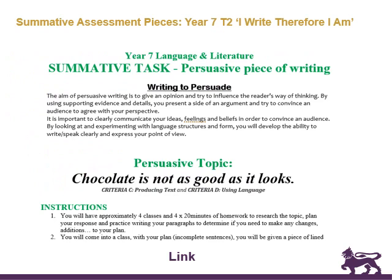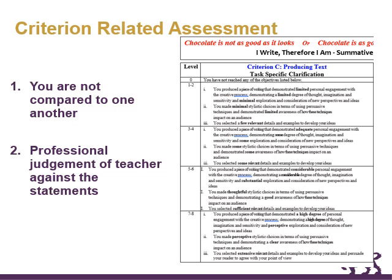When you get a task, you'll always see somewhere on the task what the criteria is — in this case Criteria C. Every task assesses one or more of four criteria. The criterion-related assessment for each criterion will have what's called task-specific clarifications. For example, a student who got a three to four has produced a piece of writing that demonstrates adequate personal engagement with the creative process. A four represents a good understanding of the topic, while a three is a general understanding but with some gaps.